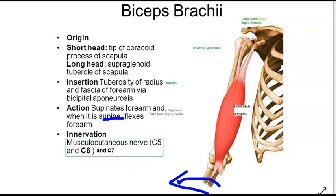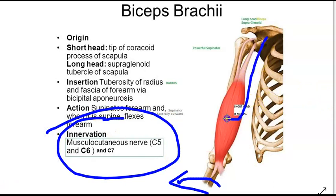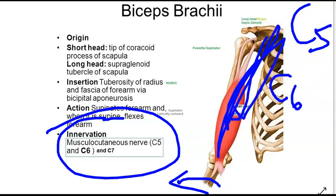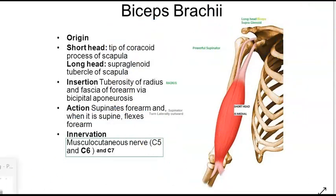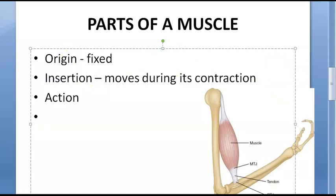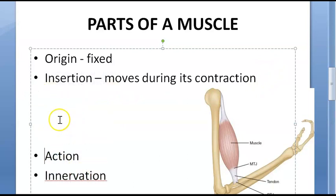For every muscle there should be a nerve supply. For the biceps, the nerve supply is the musculocutaneous nerve, coming from roots C5 and C6. For each muscle in anatomy, you need to learn the origin, insertion, action, and innervation. These are what you must cover when studying any muscle.